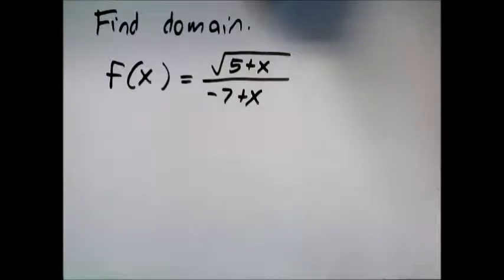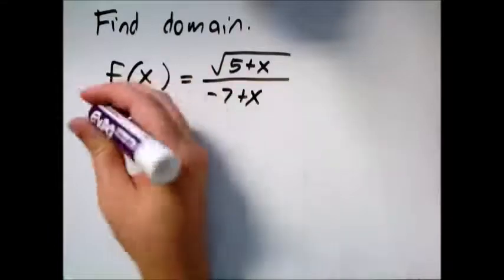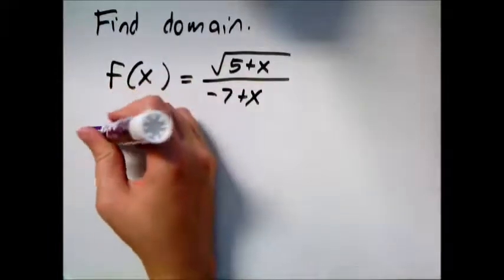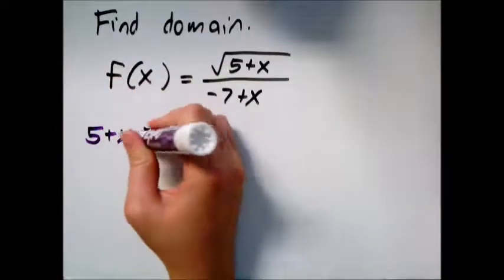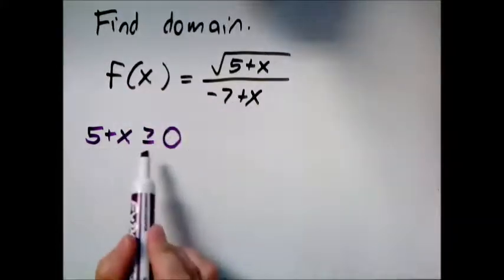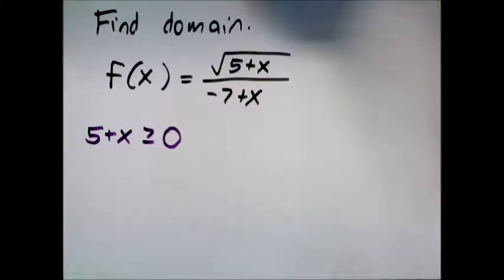So if I'm thinking under the square root scenario, whatever's under the square root, which in this case is 5 plus x, I could take the square root of 0 but I can't go any smaller. So whatever's there needs to be greater than or equal to 0.